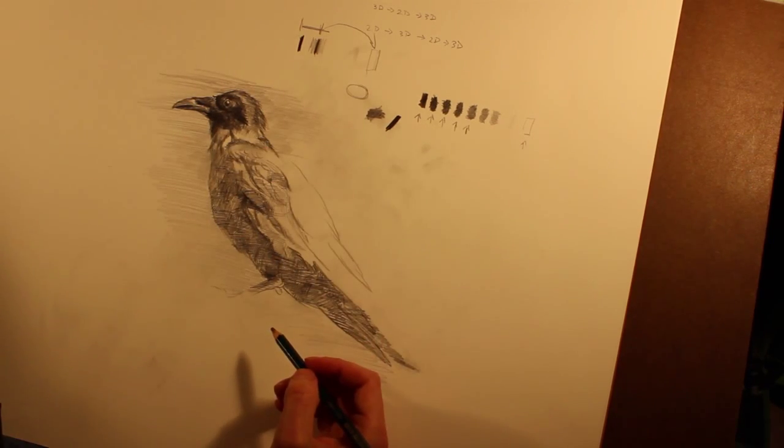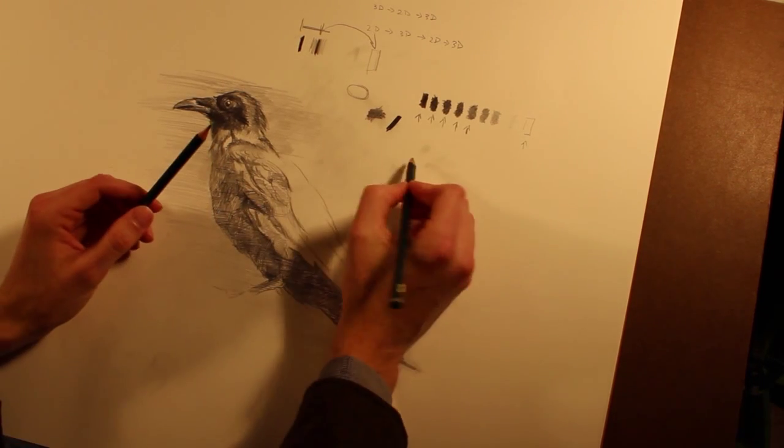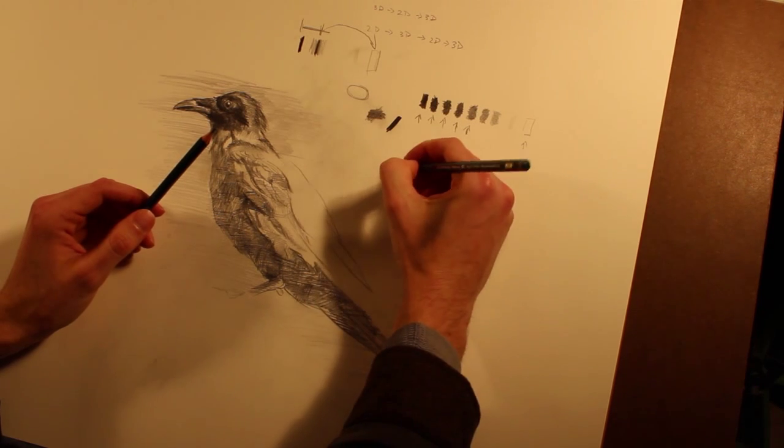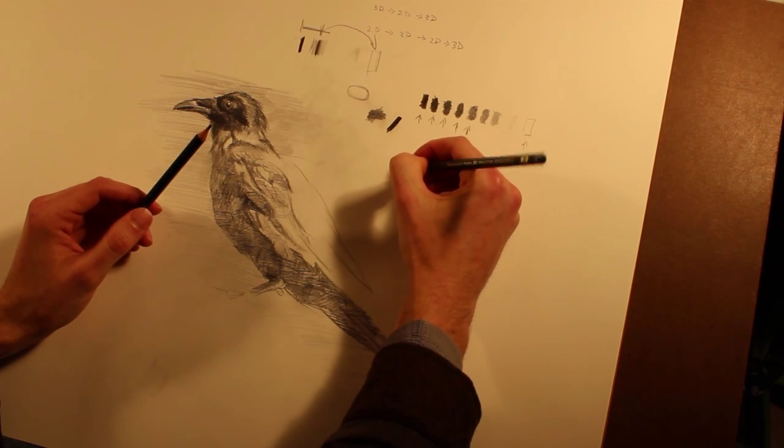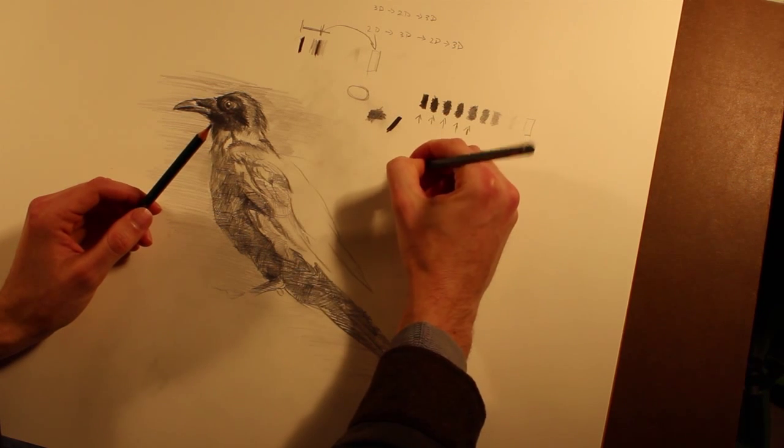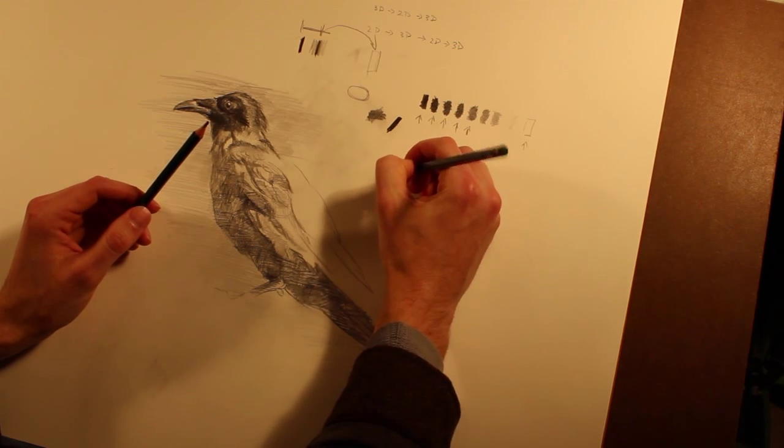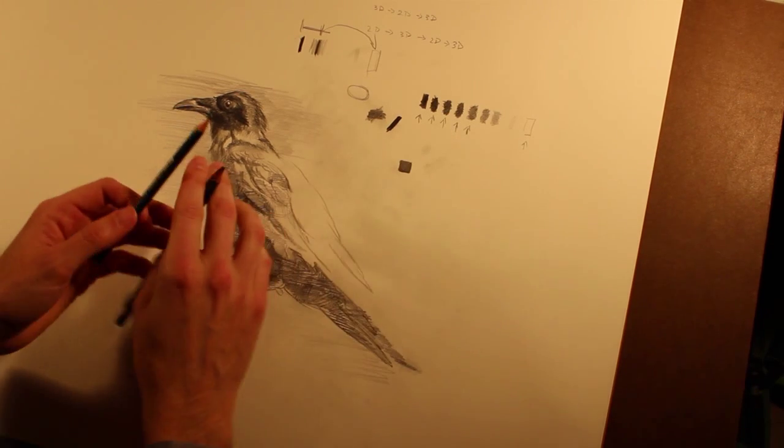And one of the things you can do with a value scale is you can use different weights of pencils and just try them out and see if a really hard pencil will get you a certain type of dark, a really soft pencil will get you another type of dark. Softer pencils tend to pick up more of the texture of the paper.